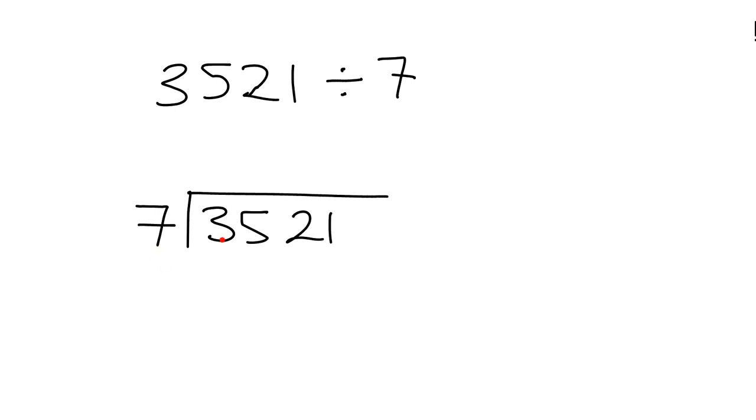We start here and say how many sevens are in three. Well there aren't any. So we then combine the three with the five and look at how many sevens are there in 35. The answer to that is five, and there's nothing left over because seven fives are 35.